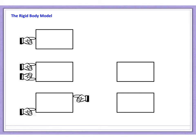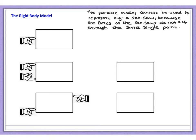That new model is called the rigid body model. If we're using the rigid body model, an object or a body is recognised as having a size and a shape, but we make the assumption that it is not deformed when forces act on it - so it doesn't squash, compress, or stretch.